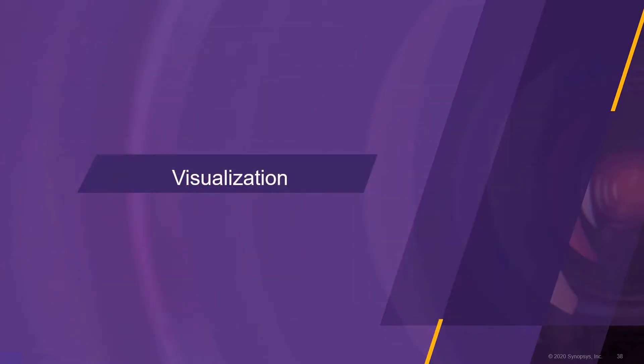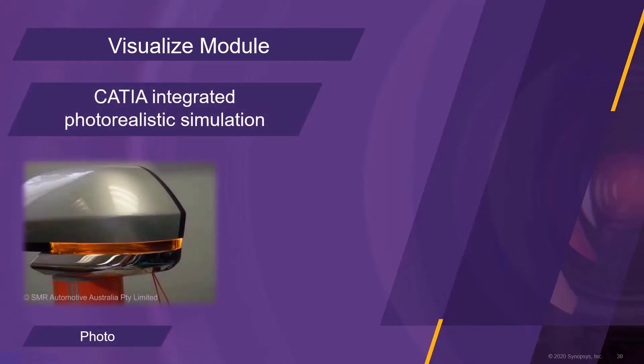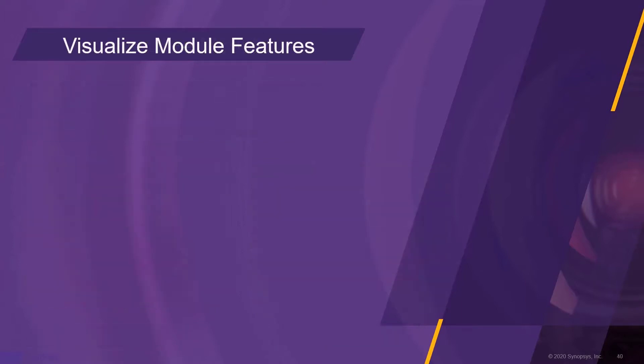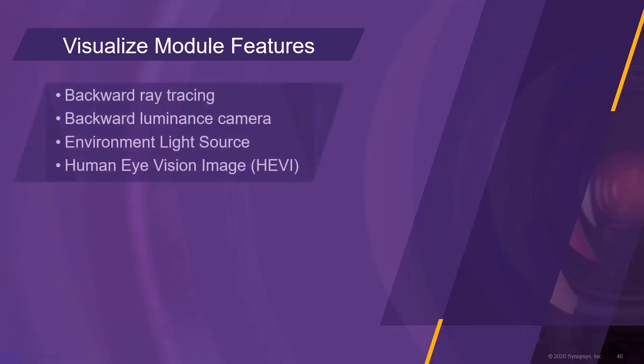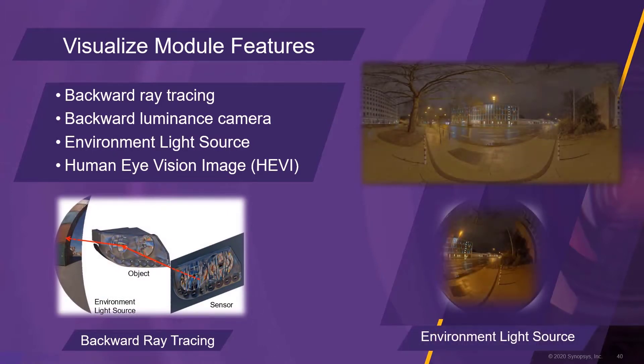The final chapter of this presentation covers the Visualize module. The Visualize module is the photorealistic simulation feature of LucidShape CAA. The photorealistic simulation capabilities are a great help for virtual prototyping, lit-appearance analysis and marketing-related activities. The Visualize module consists of four main features: the backward ray tracing mode, the backward luminance camera, the environment light source and the human eye vision image tool.